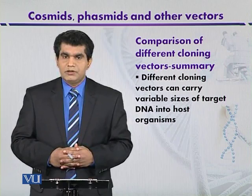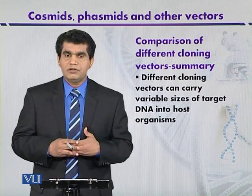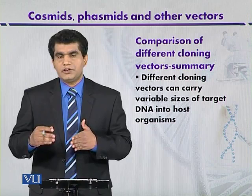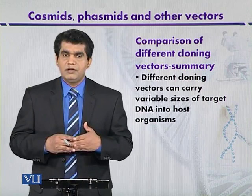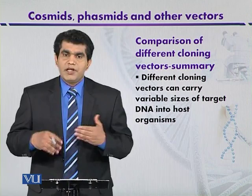We started our discussion with a bacterial plasmid. Plasmids can replicate independently of the host chromosome because of having their own region of replication, and they have the ability to clone around 10 kilobase, sometimes up to 15 kilobase, DNA fragments. One example of an artificially constructed plasmid is pBR322.